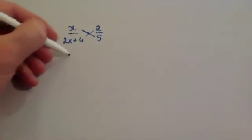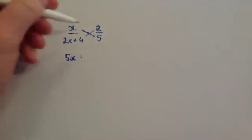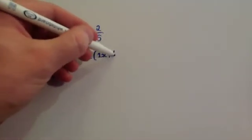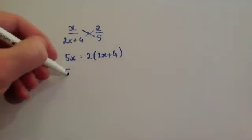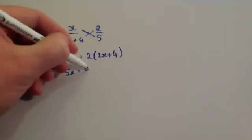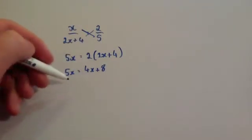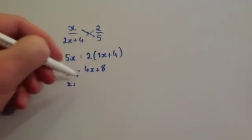So we'll do 5 times x is 5x equals 2 times this. So let's just put it in brackets, 2 times 2x plus 4. Expand your brackets to give you 5x equals 4x plus 8. Take away 4x from both sides to leave you with x equals 8.